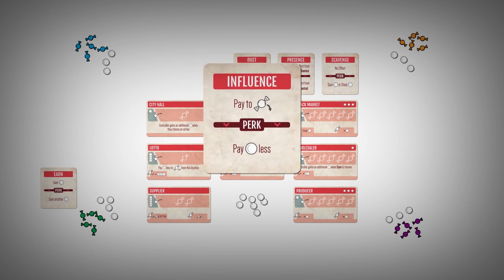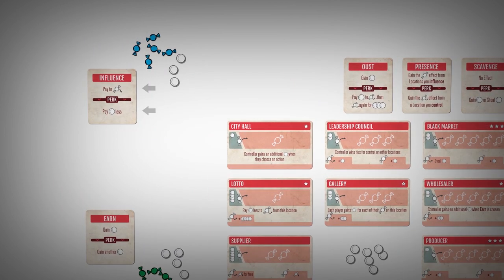The influence action allows players to pay mints to add an influence token to an open influence space. The perk for selecting this action reduces the cost to influence a location by one to a minimum of zero.